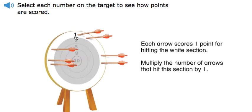Each arrow scores one point for hitting the white section. Multiply the number of arrows that hit this section by one.